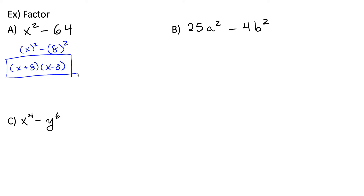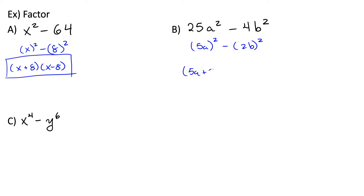For example b, it's a little more complicated because we have some coefficients, but notice that our coefficients are also perfect squares: 25 is 5 squared and 4 is 2 squared. So we can rewrite this as 5a in parentheses squared minus 2b in parentheses squared. Now that we see we have a difference of two perfect squares, we can express this as 5a plus 2b times 5a minus 2b.